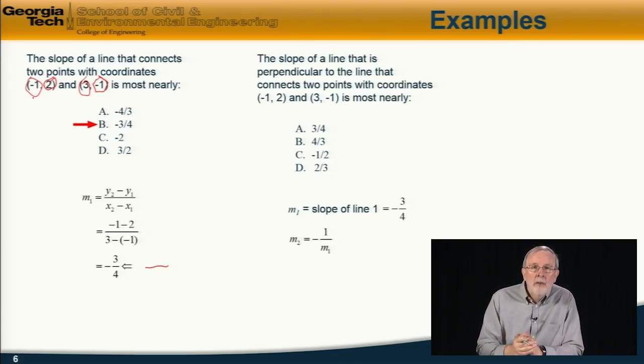And the line which is perpendicular to that, m2 = -1/m1, because the product of those two slopes is equal to -1 if they're perpendicular to each other. Therefore, the slope of the line which is perpendicular is equal to 4/3, and the answer is b.